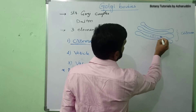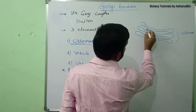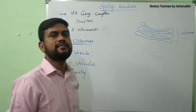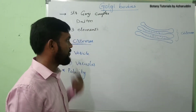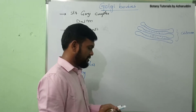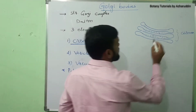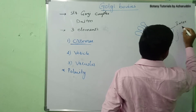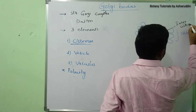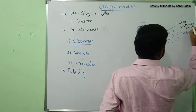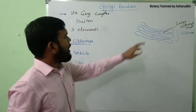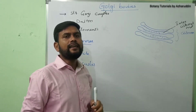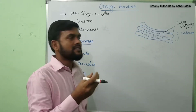These cisternae are interconnected with a cement-like substance. This cement-like substance is called inter-cisternal material.